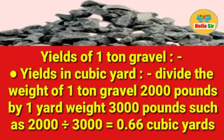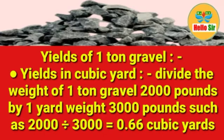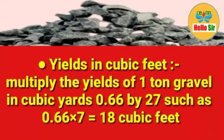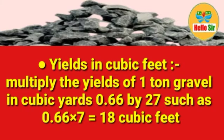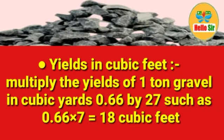So, first calculate the yield of 1 ton of gravel. Yield in cubic yards: divide the weight of 1 ton of gravel — 2,000 pounds — by 3,000, which equals 0.66 cubic yards. Yield in cubic feet: multiply 0.66 cubic yards by 27, which equals 18 cubic feet.